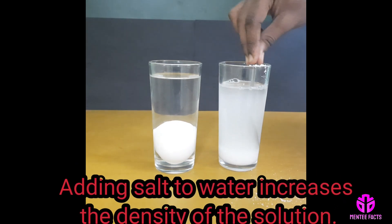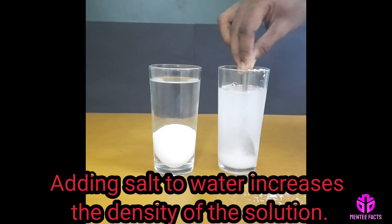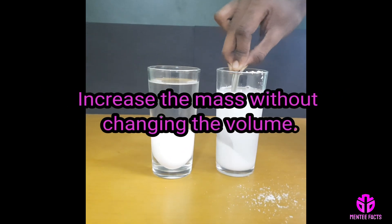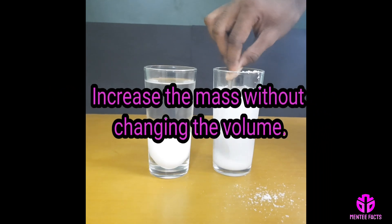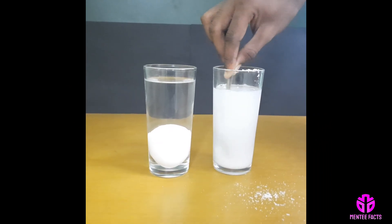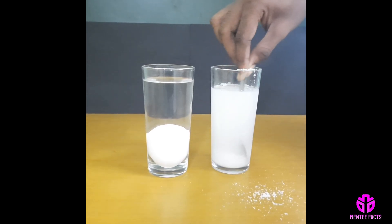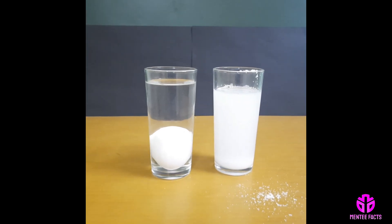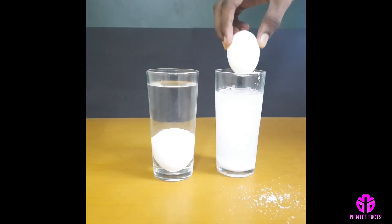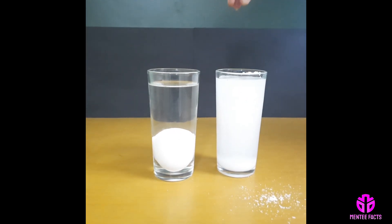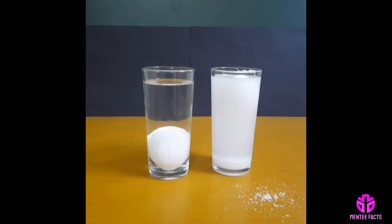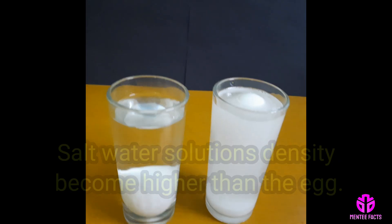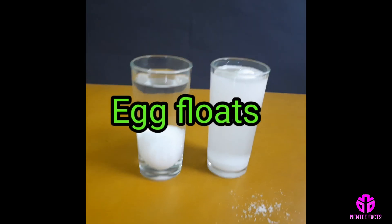Adding salt to water increases the density of the solution because the salt, sodium and chloride ions, increase the mass without changing the volume very much. When enough salt is added to the water, the salt water solution's density becomes higher than the egg's, so the egg floats in salt water.